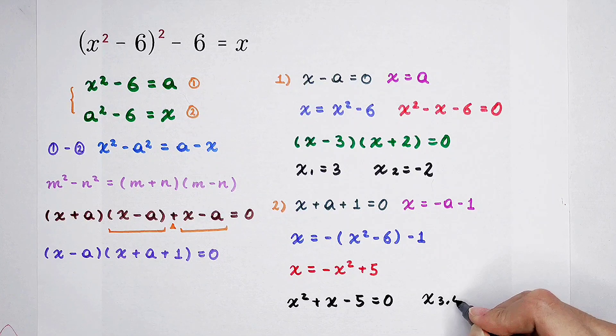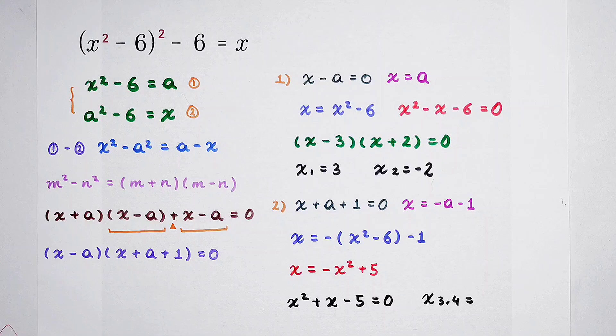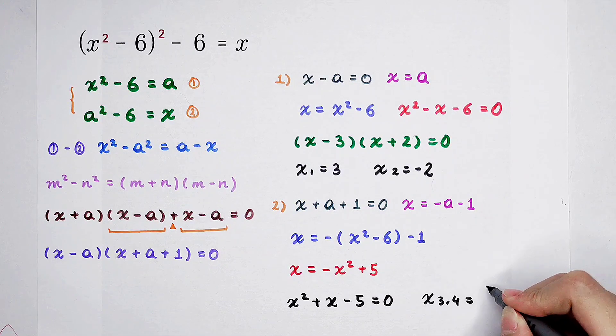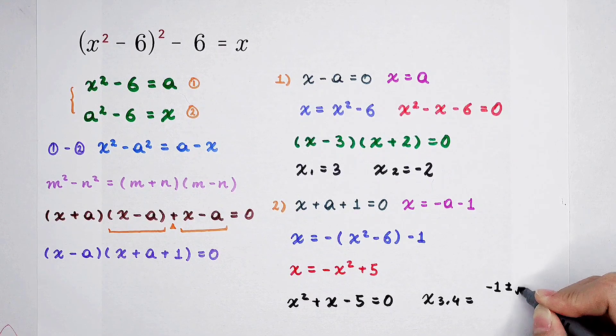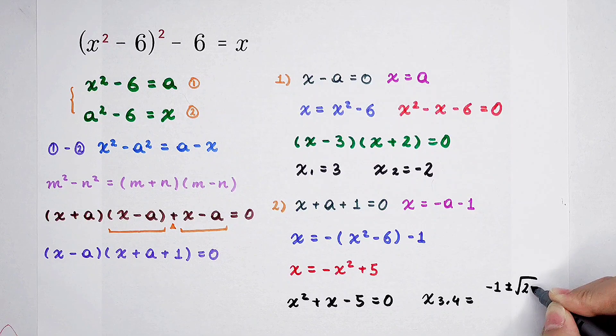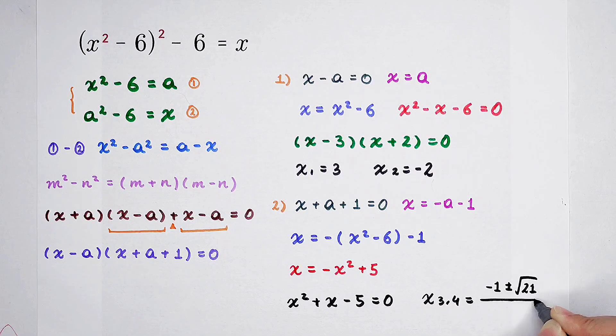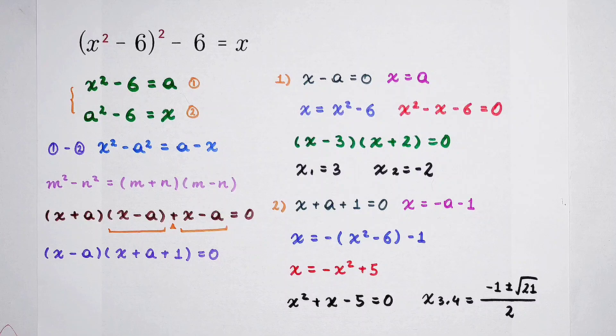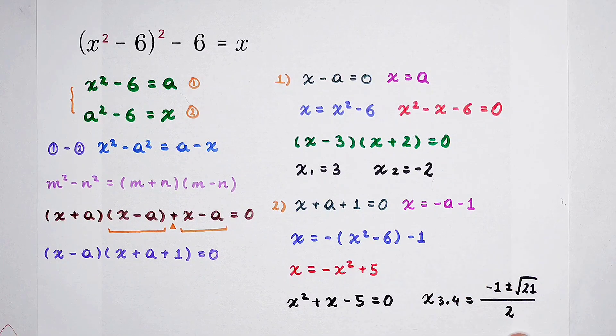x3 and 4. They are negative 1 plus or minus square root of 21, and then divided by 2. And they are the other roots.